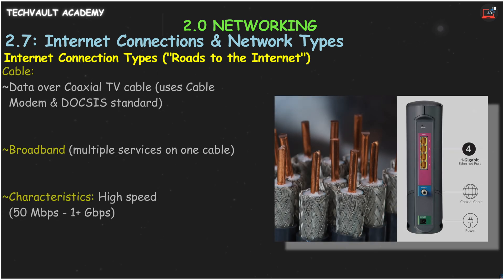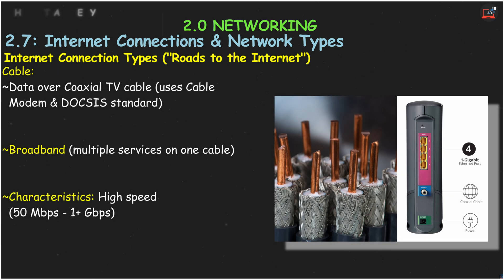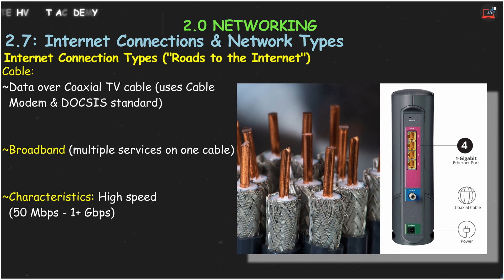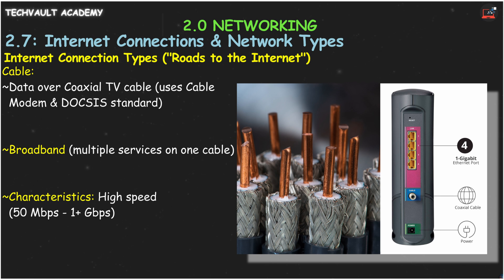Then there's cable internet, using the same coaxial cable as your TV. A cable modem, using the DOCSIS standard, translates these signals for your network. It's broadband, meaning it carries multiple services like internet, TV, and phone simultaneously. Speeds can be very high, often a gigabit or more.